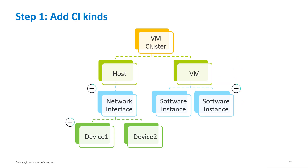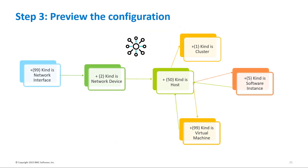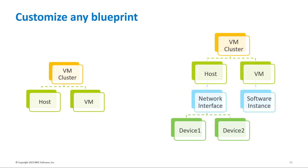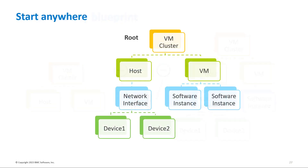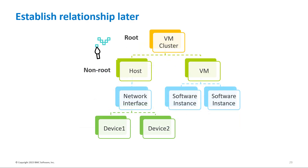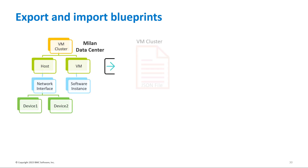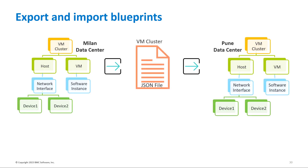The three steps are: add CI kinds, define filter rules, and preview with a valid configuration. Susan can customize any existing blueprint to create a new blueprint. She can start the blueprint with a root or non-root CI kind and establish the relationship later. She can also easily export blueprints from one tenant and import into another tenant.